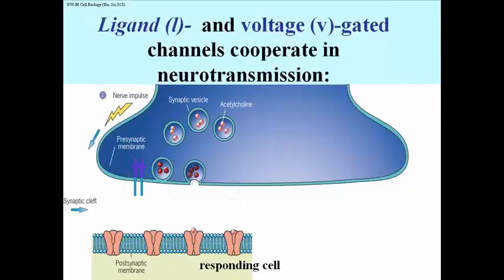Let's take a look at a nerve ending a little bit more closely, and see how the ion flows are regulated. So here's our nerve impulse. It's moving along the axon, being propagated, until that potential difference reaches a channel protein, which in this case is a calcium channel protein.